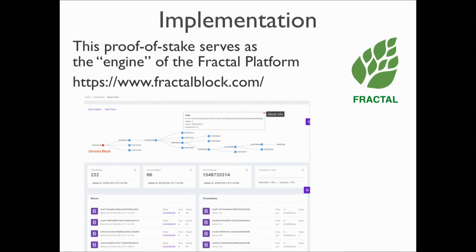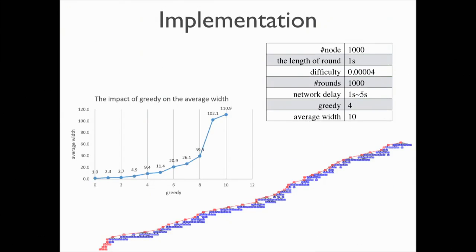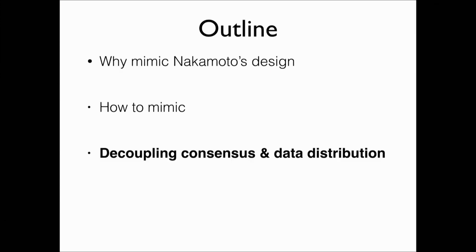We have experiments and you can see what the chain looks like. There are even some experimental results. For example, this table shows that if we tune the greedy parameters — allowing not-too-greedy, or improving to three-greedy, four-greedy, and so on — these weights become larger. That's the consensus part: how we can design a proof-of-stake consensus that is very similar to Nakamoto's design.